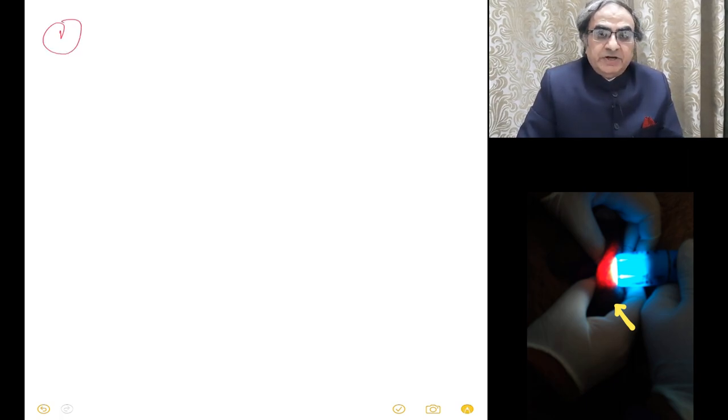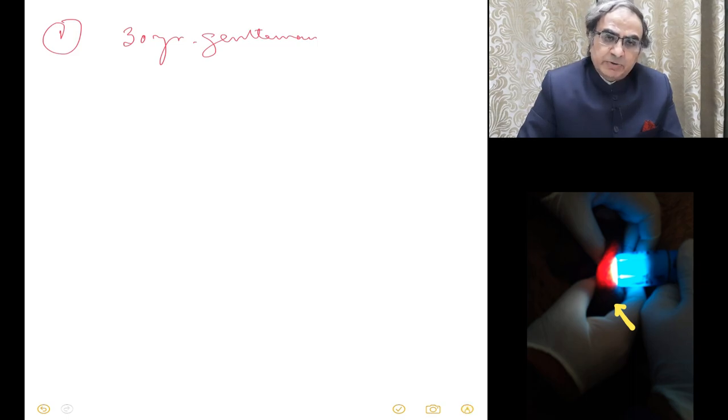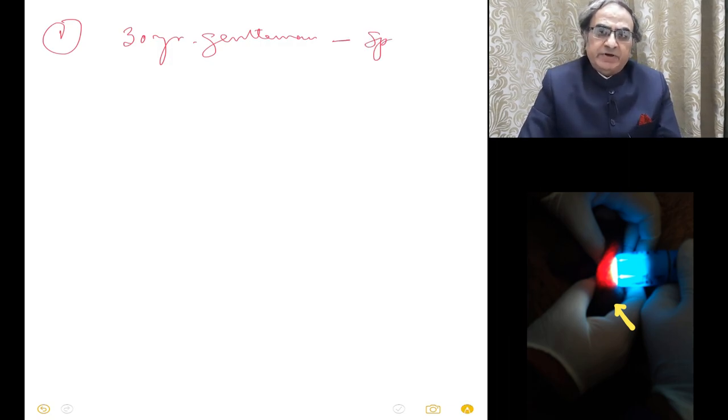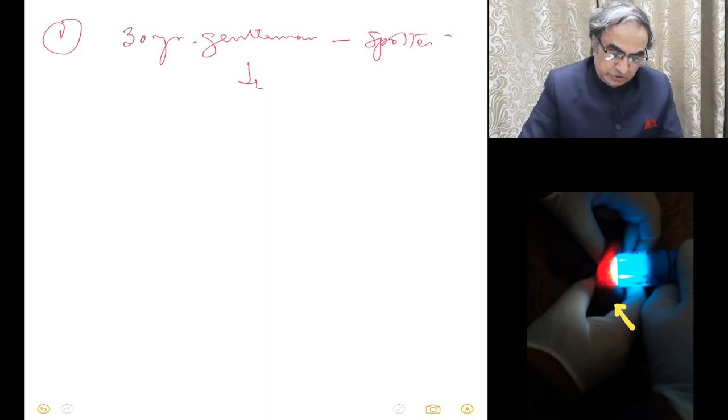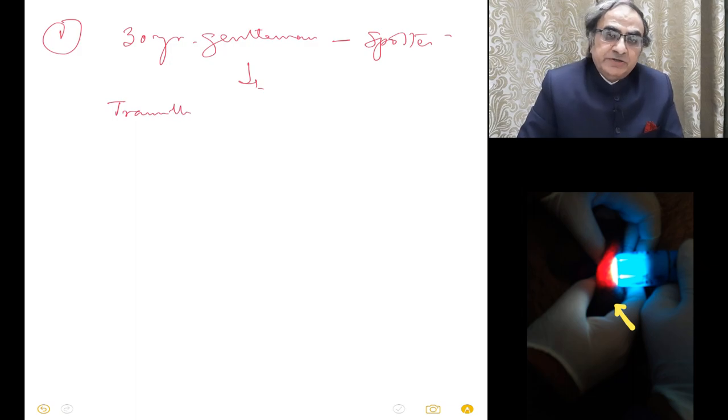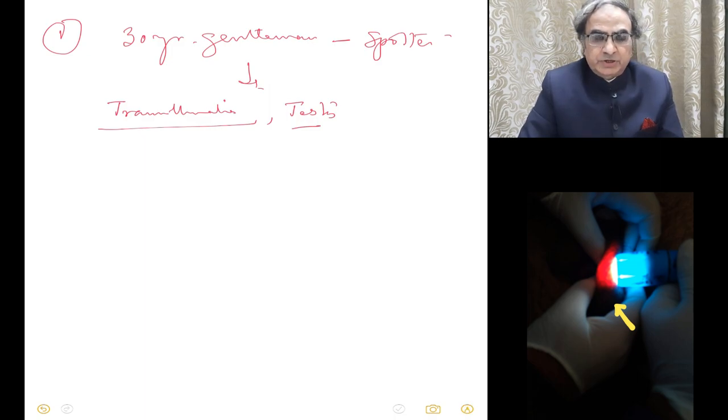Now the first case that we would discuss is the one where we had this 30-year-old gentleman. We did not give you much of a history because that was more of a spotter. The first answer that I got was from Rishabh, and it came within 10 minutes. There was a transillumination test being done, and it was specially pointed that testes are separately palpable. That was a good enough hint actually.